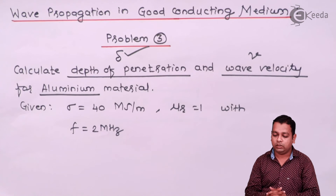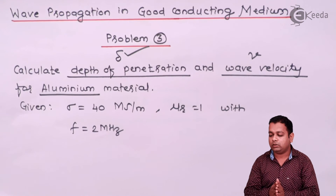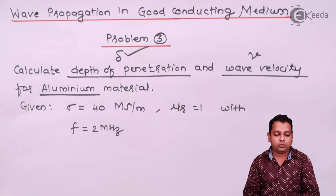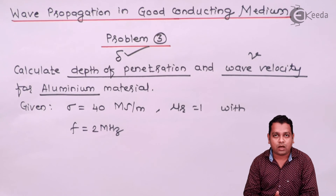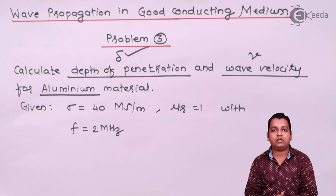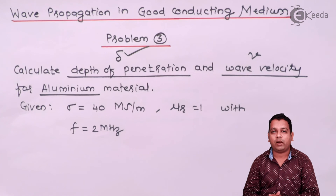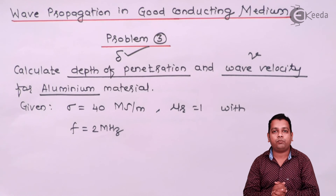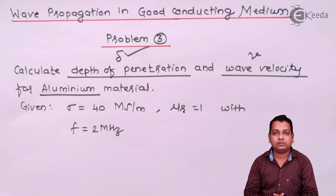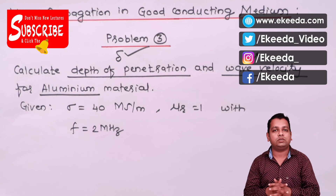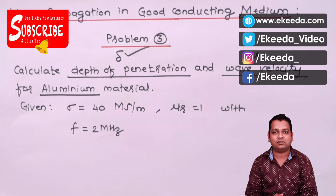I hope you have understood how to determine the depth of penetration and velocity for a good conducting medium when conductivity, magnetic permeability, and frequency of propagation are known. In the next video, we are going to start with the new topic — Poynting's theorem — which will give us information about the power associated with wave propagation. You can subscribe to the channel for more problems and information on electromagnetic field theory. Thank you.